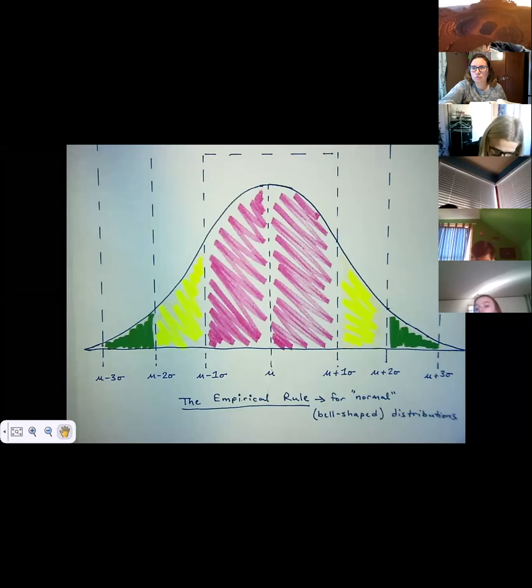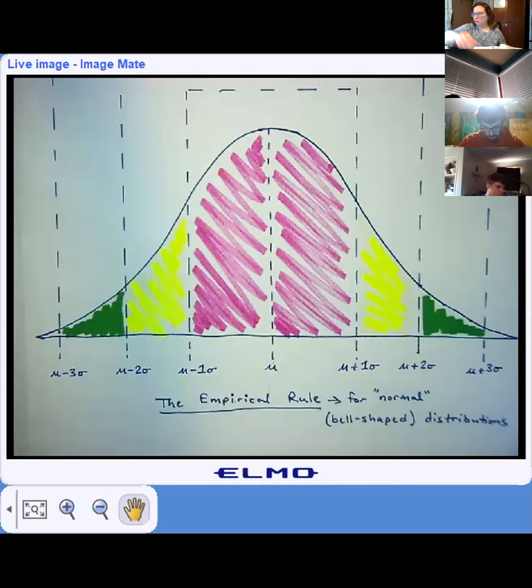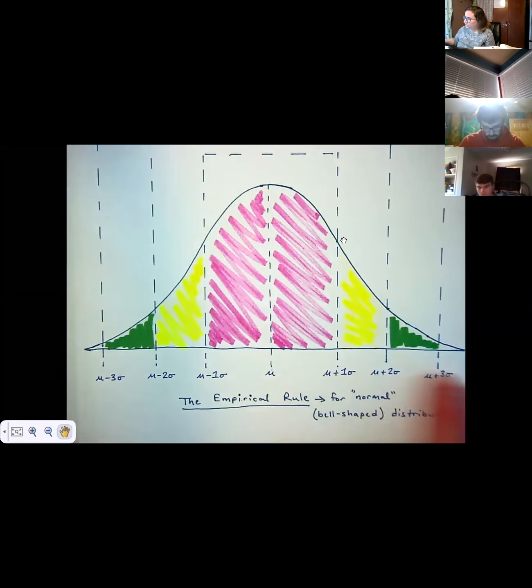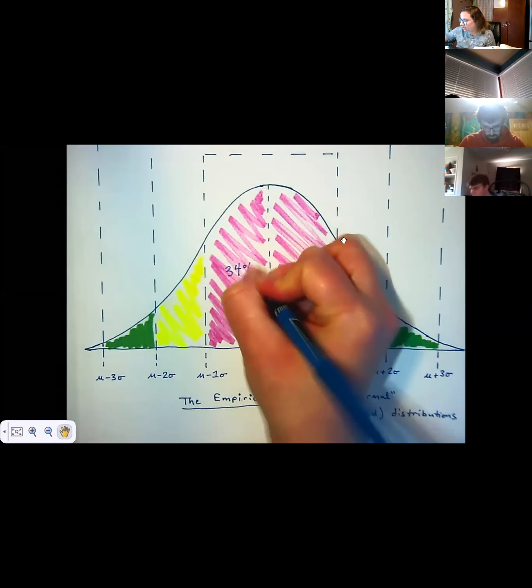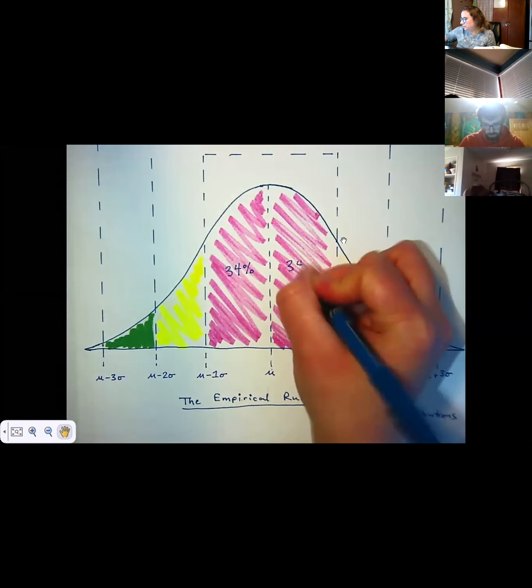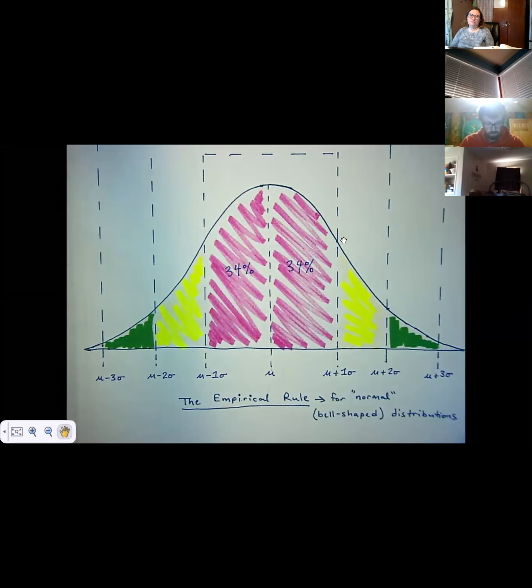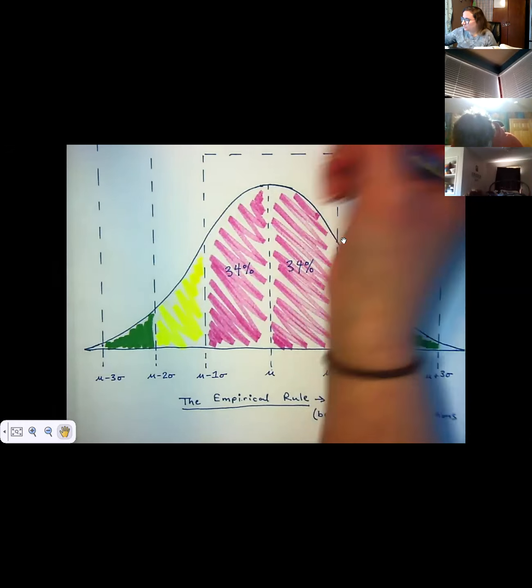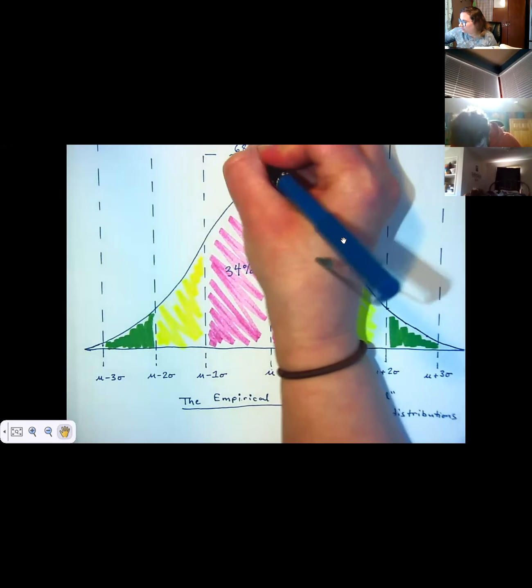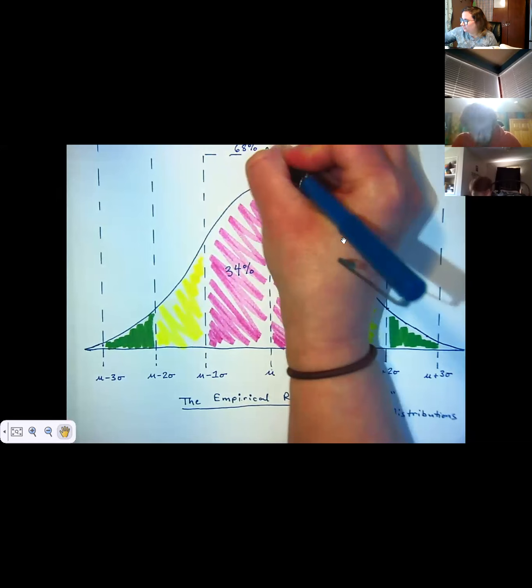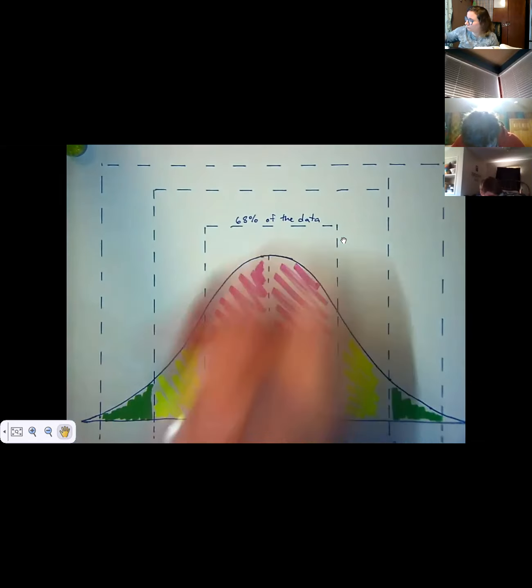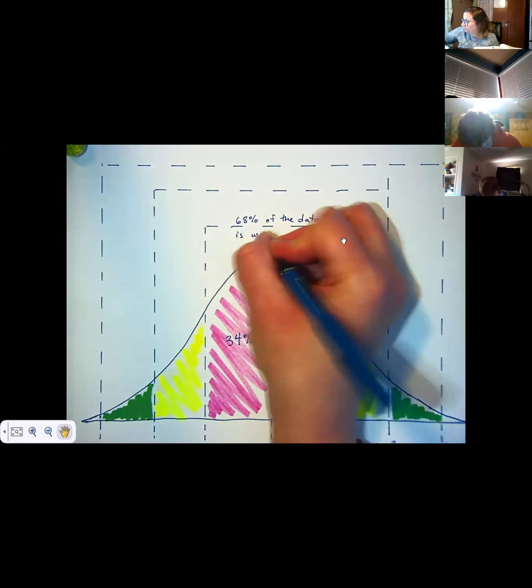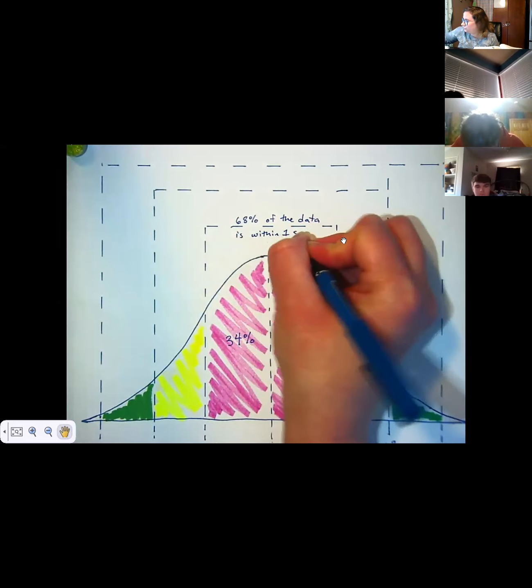Okay, so now with a standard deviation, 34% of a bell curve is in this area right here, and 34% is right here because it's symmetric, it's the same on the left and the right, which means, and I'm going to write this up here,